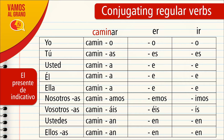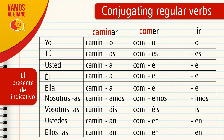Now the verbs ending in ER, like the verb COMER. The conjugation would be: Yo COMO (I eat), Tú COMES (you eat), Usted COME (you eat), Él COME (he eats), Ella COME (she eats), Nosotros COMEMOS (we eat), Vosotros COMÉIS (you all eat), Ustedes COMEN (you all eat), and Ellos or Ellas COMEN (they eat).